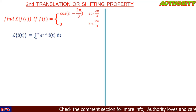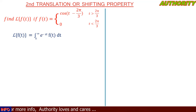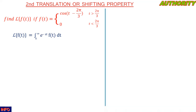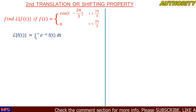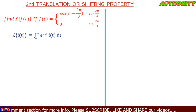By definition, the Laplace transform of f(t) is the integral from zero to infinity of e raised to the power of minus st times f(t) dt. In this case we have a second translation or shifting function. Please watch a tutorial on the second translation property so you understand what we are doing better.